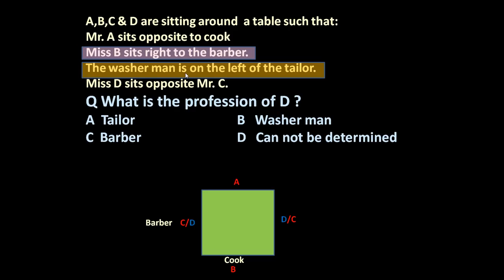The washerman is on the left of the tailor. Only two positions are left. And the given condition is the washerman is on the left of the tailor. So if tailor is here, this is the right side of the tailor and this is the left side of the tailor. So on the left side of the tailor, washerman is there. So washerman is here, tailor is here, barber is here, cook is here.